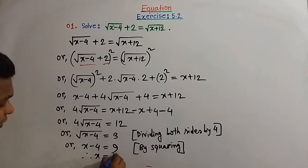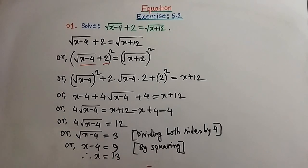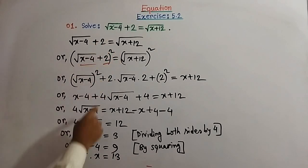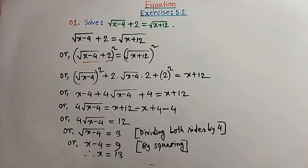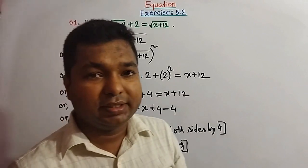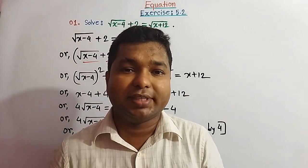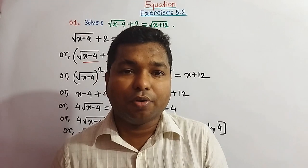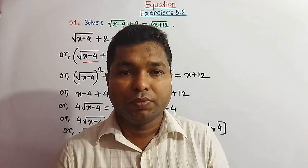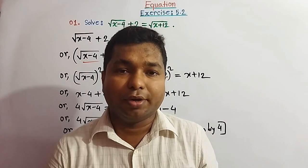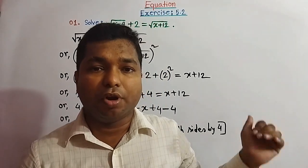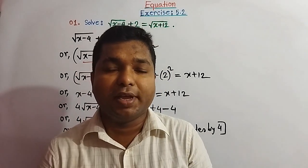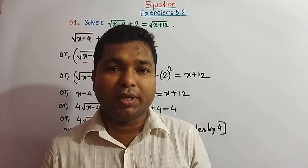Therefore the value of x will be 9 plus 4, that is 13. So finally we get the solution x equal to 13. But for equations involving radicals, sometimes all roots do not satisfy the equation — those roots are called extraneous roots. So we have to test whether the root satisfies the equation, by showing the verification.